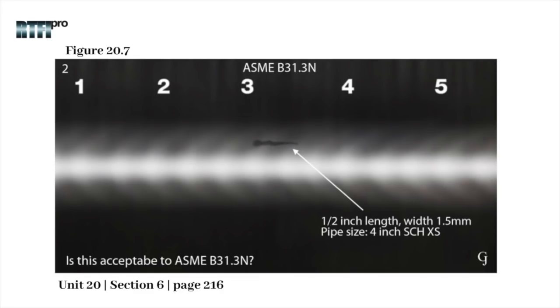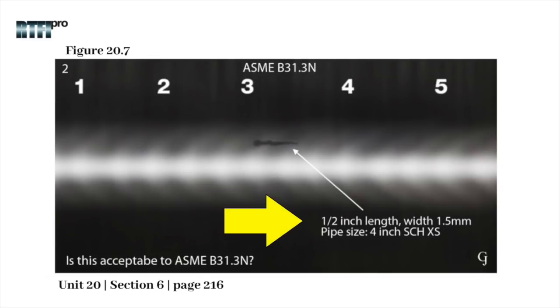Here we have a radiograph with an elongated indication. The indication is a half inch in length. Its width is 1.5 millimeters. The pipe size is 4 inch SCED extra strong.